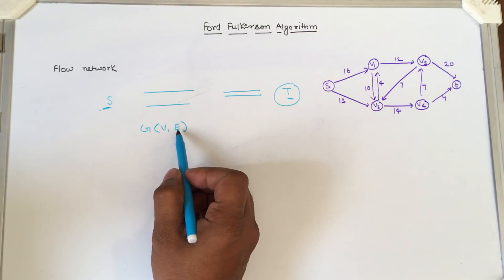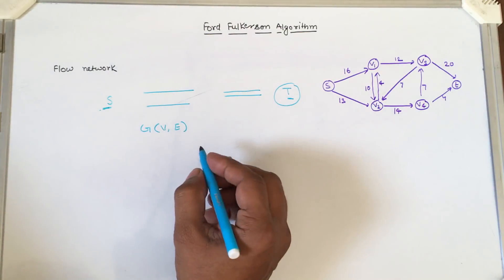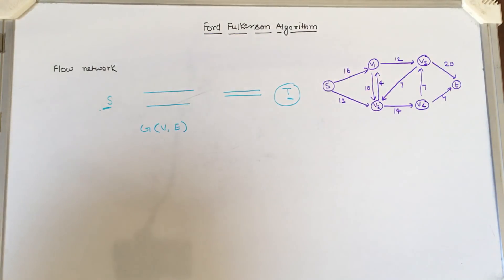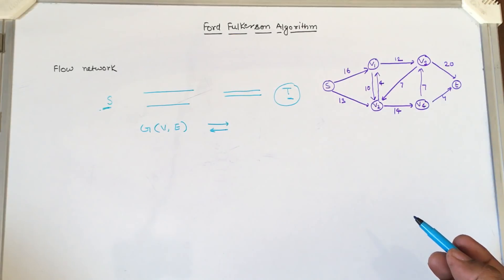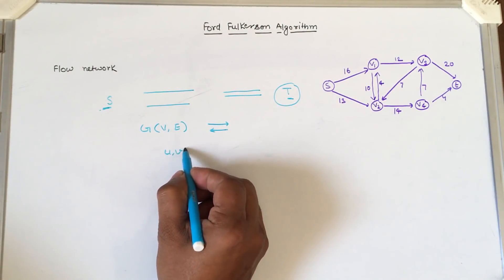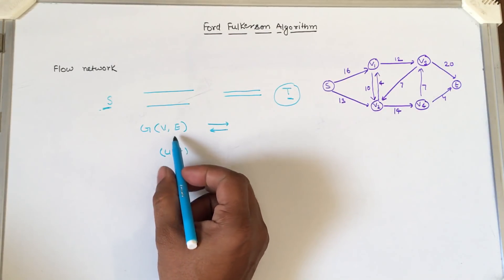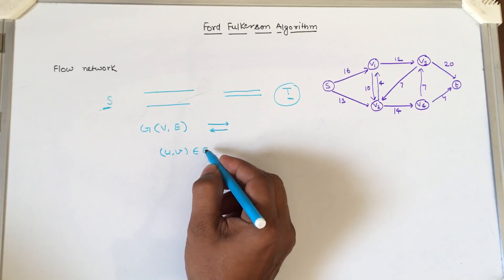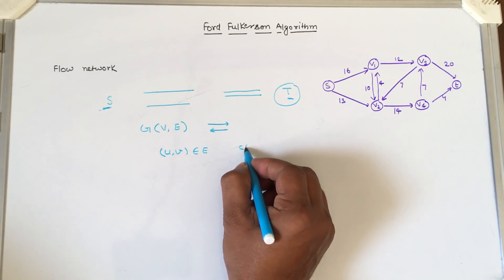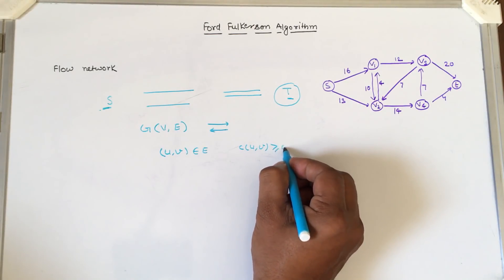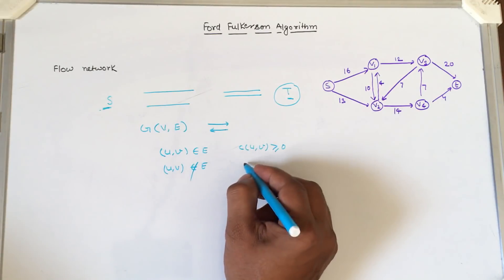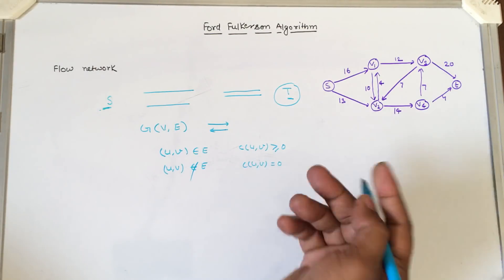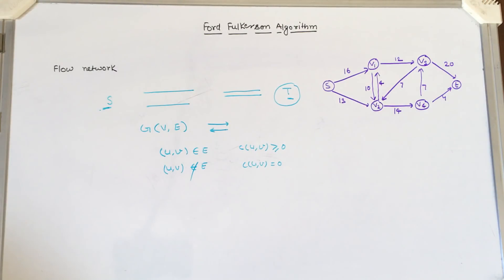In the graph, V represents the cities, E represents the pipes, and the weight of each edge represents the capacity of the pipe. It is a directed graph — the direction indicates the flow direction. Each edge u→v must have a non-negative capacity C(u,v) ≥ 0. If the edge does not belong to set E, then C(u,v) = 0.